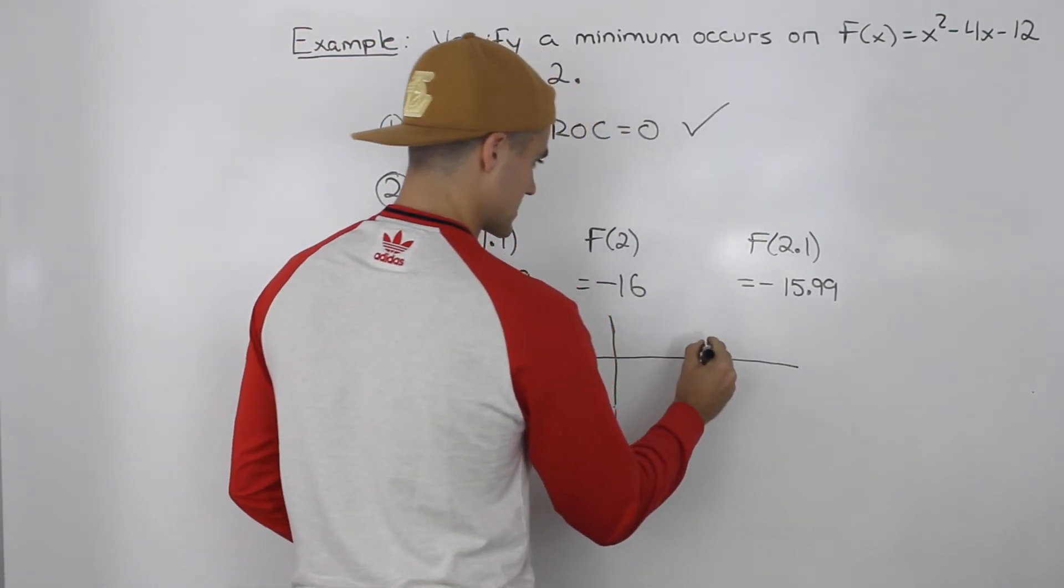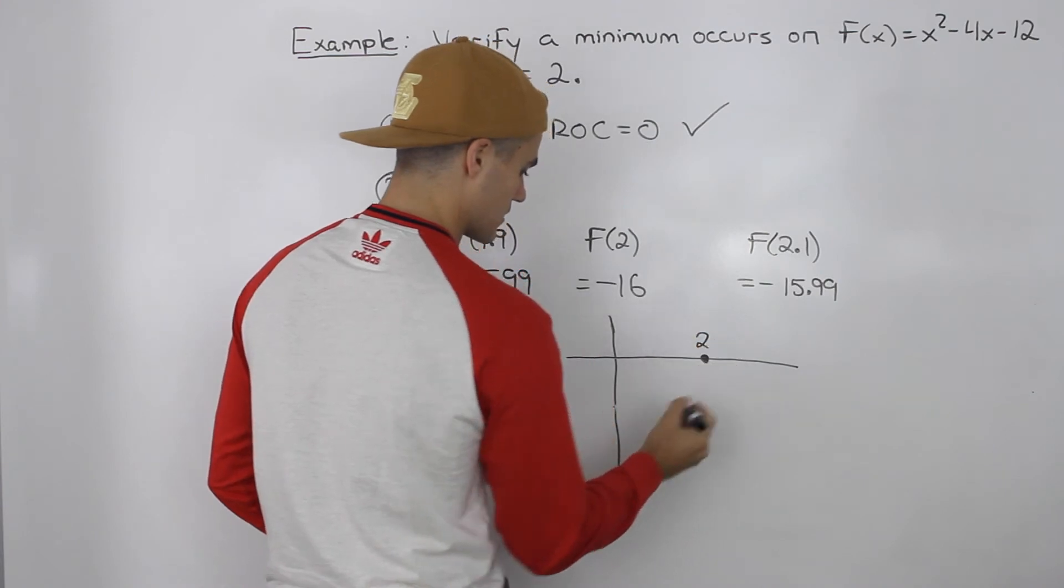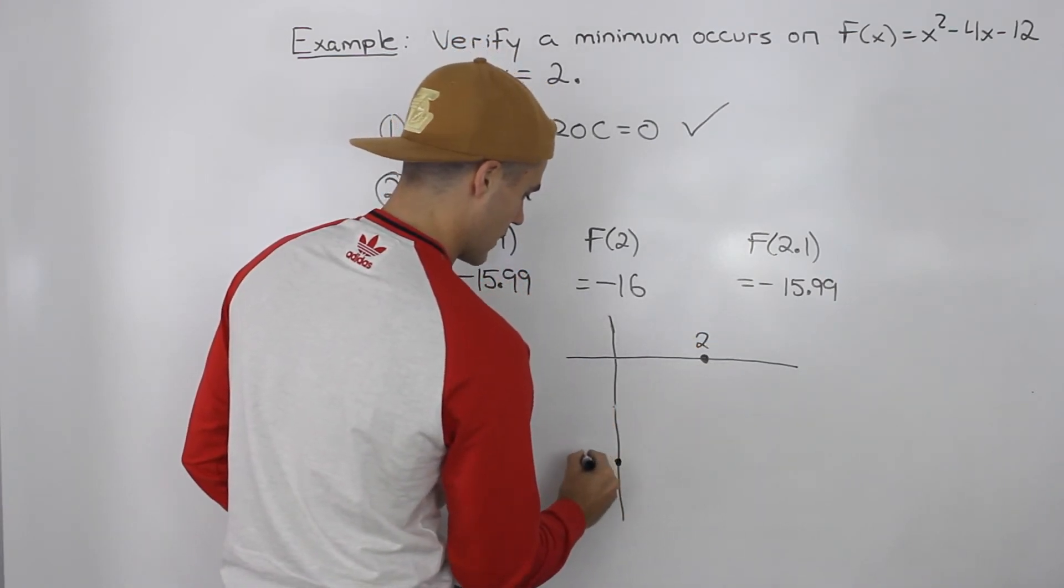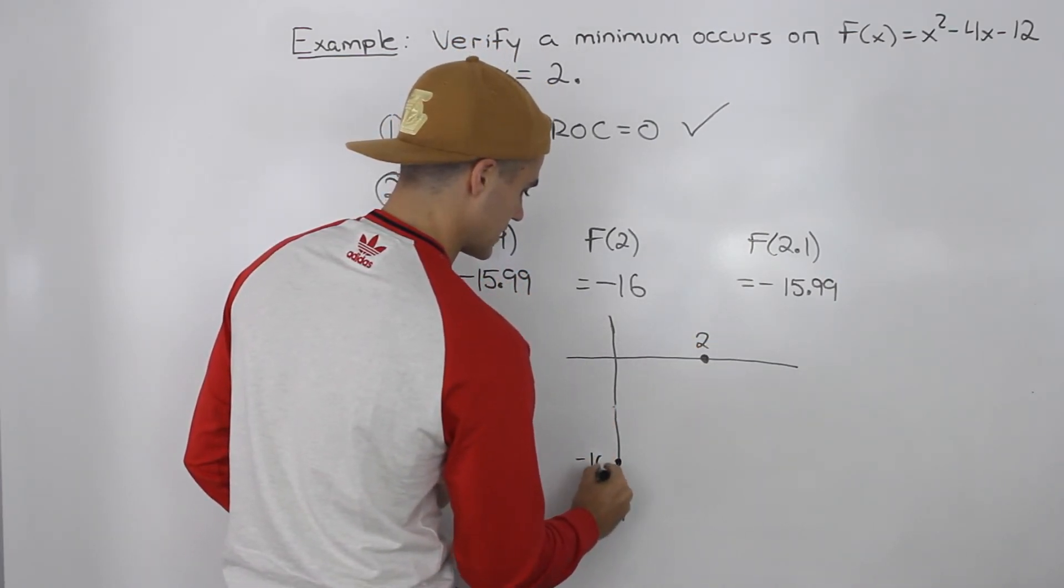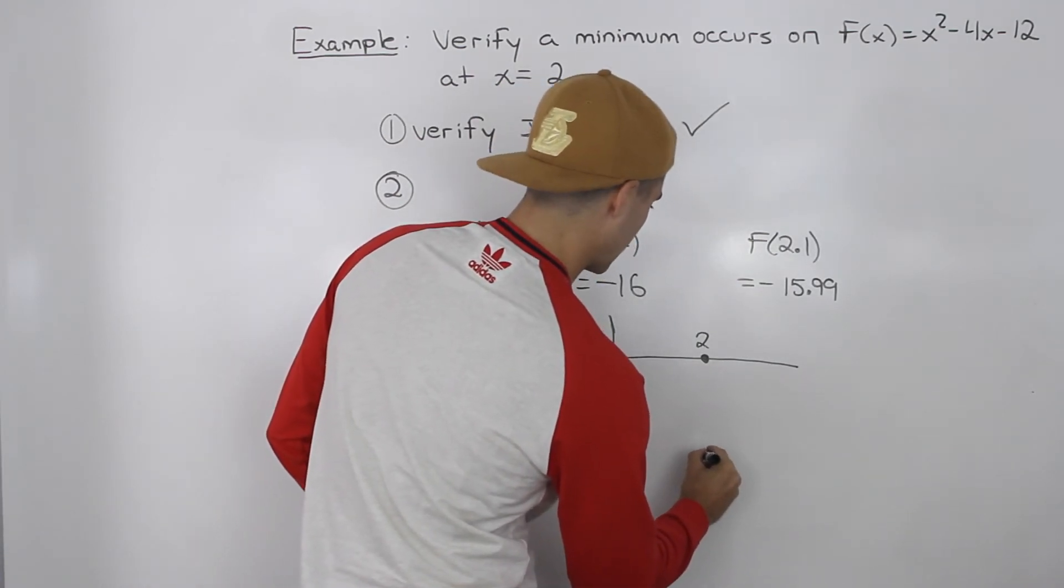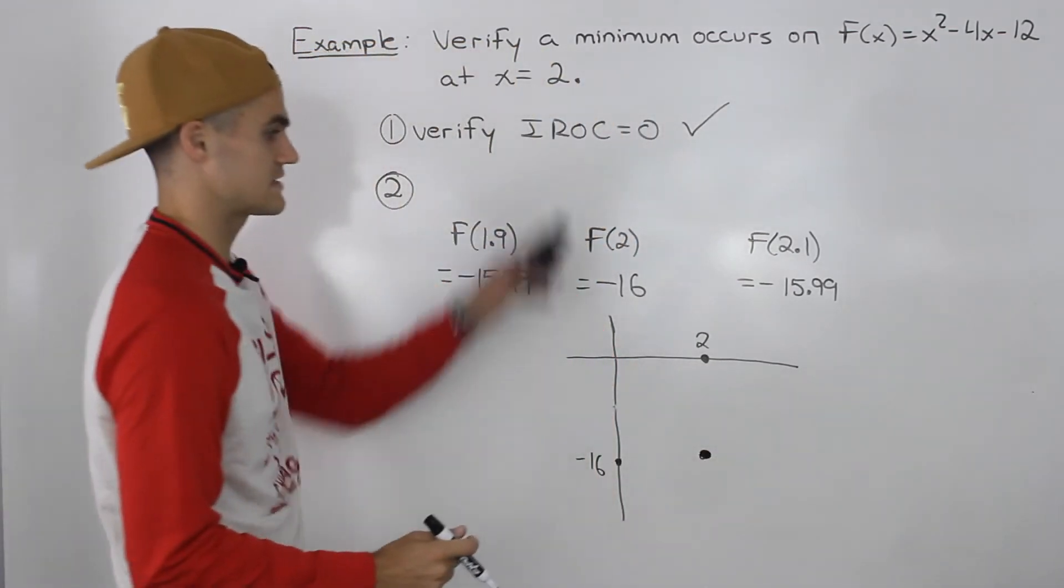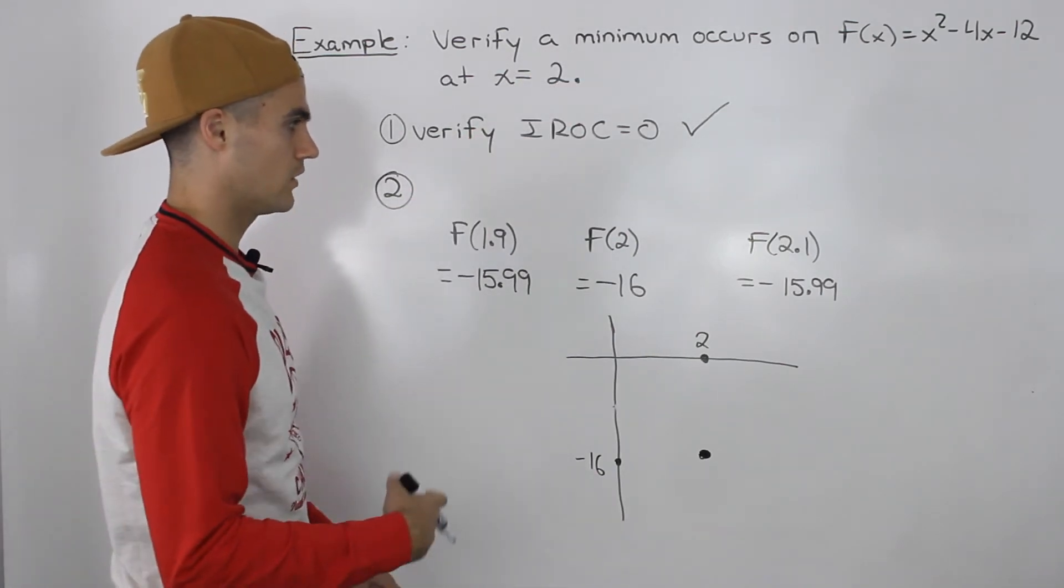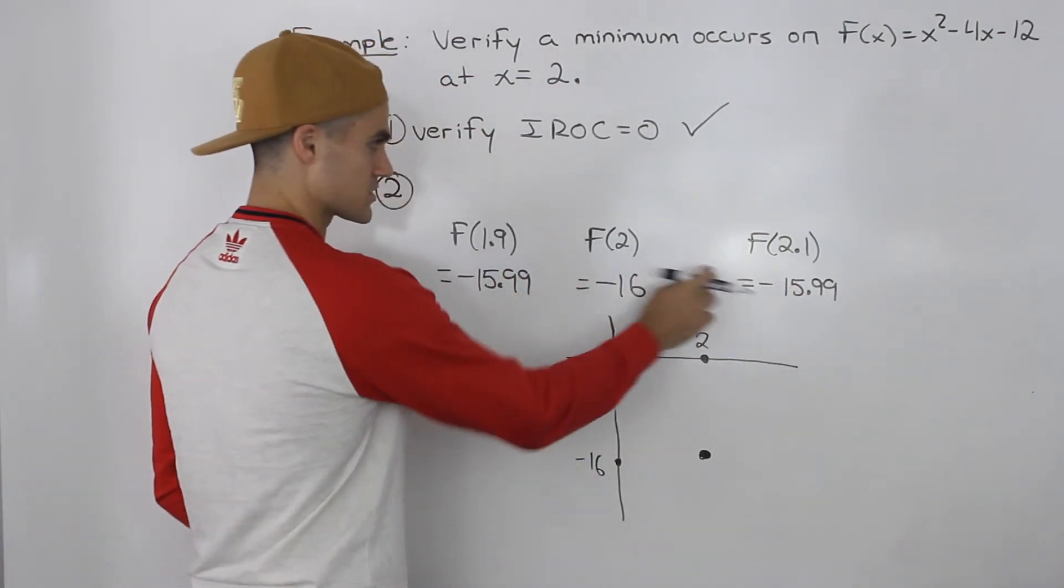So f(2) = -16. That means if the x value is here, 2, and the y value is -16 here. So that point will be there, and that's the point we have to verify is a minimum. Now what we can do, let's plot these points.